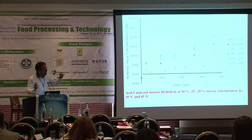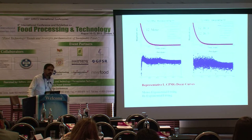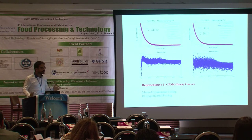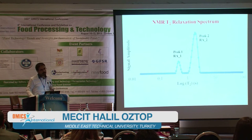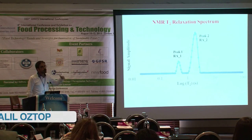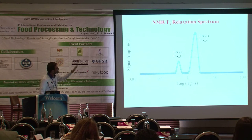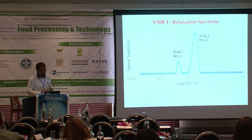We looked at how these reducing sugar contents are correlated with the relaxation times measured through NMR experiments. Here you see a T2 decay curve for the sucrose solution — on the left, a mono-exponential fitting, and on the right, a bi-exponential fitting. The relaxation spectrum shows two peaks denoting the sucrose solution during the reaction: peak one and peak two. The relative areas of these peaks can be correlated with the reducing sugar content.